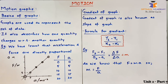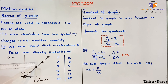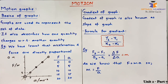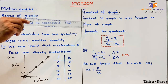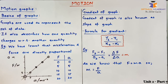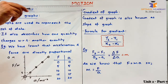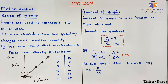Note that since force and acceleration are directly proportional to each other, the line drawn is a straight line passing through the origin. So for any two quantities that are directly proportional to each other, the graph will be a straight line passing through the origin. Now we will discuss what the gradient of a graph means.